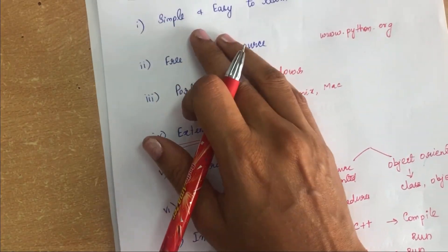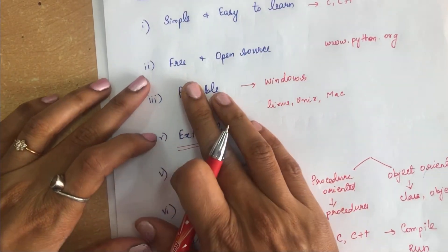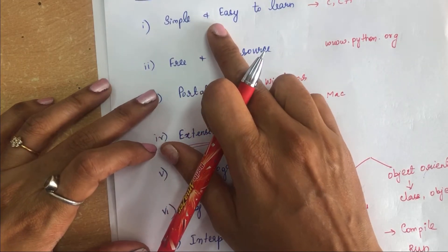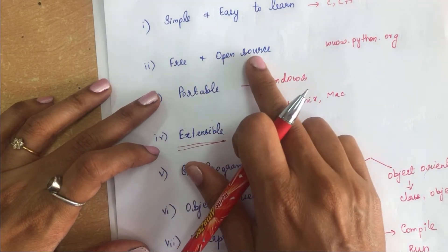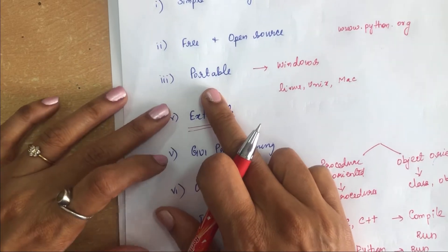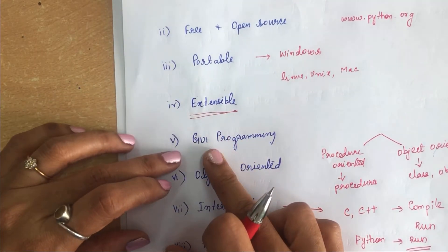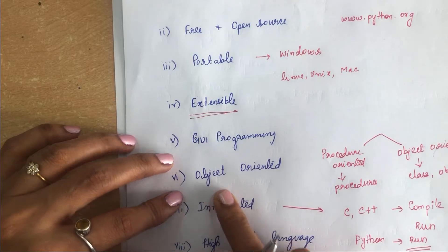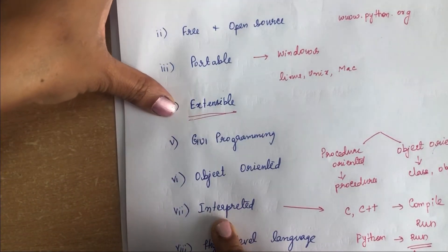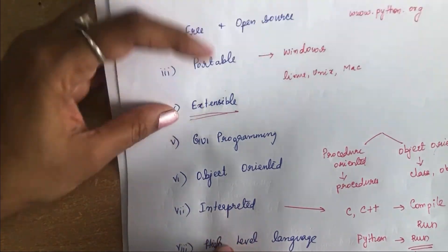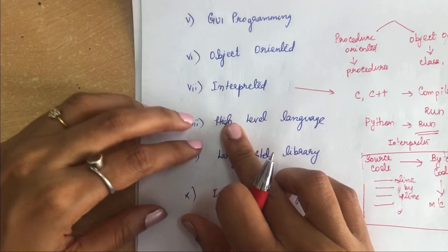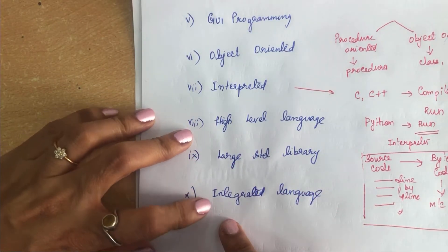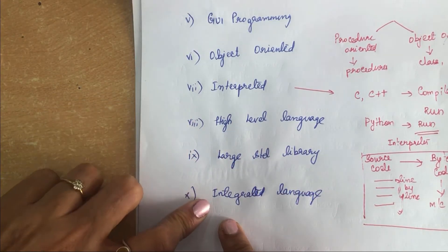So we have seen ten features of Python: simple and easy to learn, free and open source, portable, extensible, GUI application support, object oriented, interpreted — executed line by line, high level language, a wide range of library routines, and integrated language.